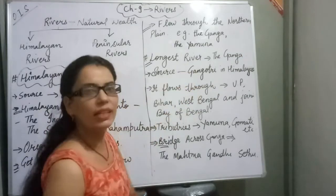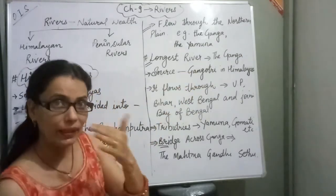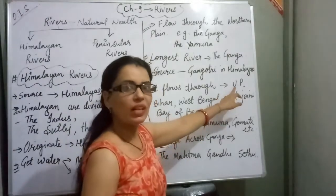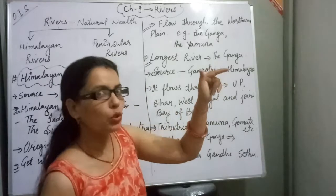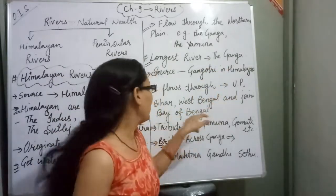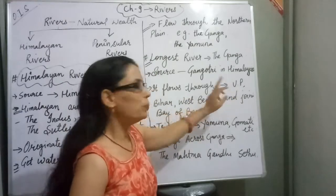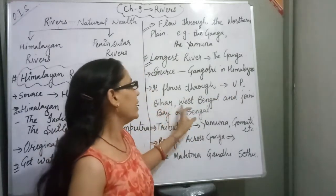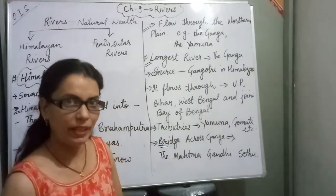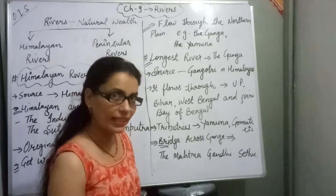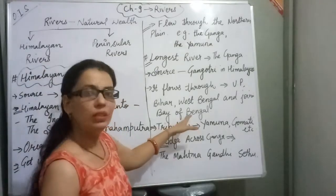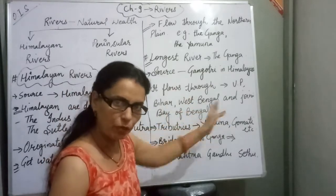Ganga flows through UP, Bihar, and West Bengal, and finally empties into the Bay of Bengal.